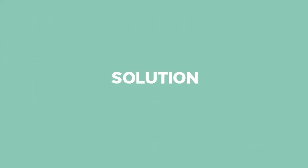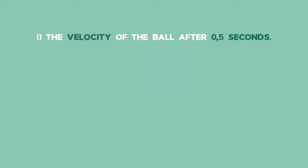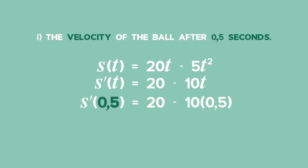Solution 1. After 0.5 seconds means at that specific time, so find the derivative. The derivative of s with respect to t equals 20 minus 10t. Substitute 0.5 into the derivative. The velocity of the ball after 0.5 seconds is 19.5 meters per second.